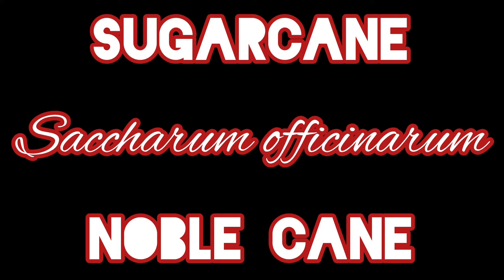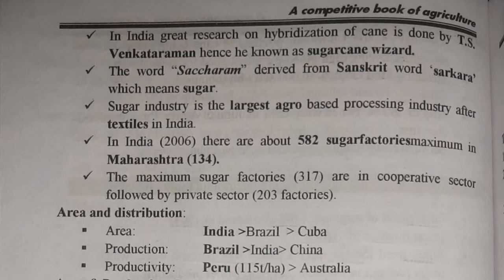The next crop is sugarcane, that is Saccharum officinarum. People who go to the office are called noble, so it is also called noble cane. In India, hybridization research was done by T.S. Venkatraman, and he is called the sugarcane wizard. Saccharum is derived from the Sanskrit word 'sarkara' meaning sugar.